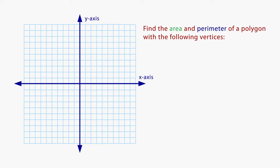Let's find the area and perimeter of a polygon with vertices at (4, 7), (4, -5), (-7, 7), and (-7, -5). First, we plot the points. They make a rectangle.